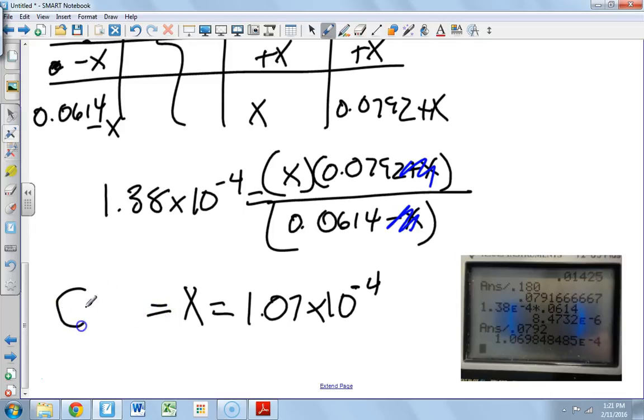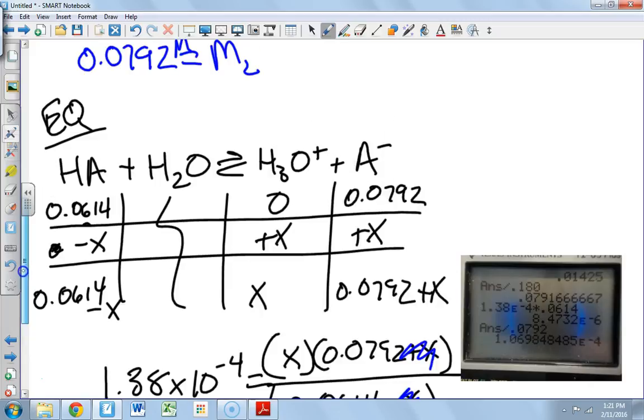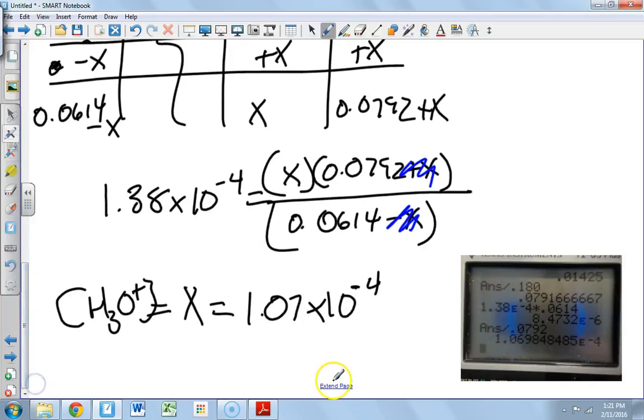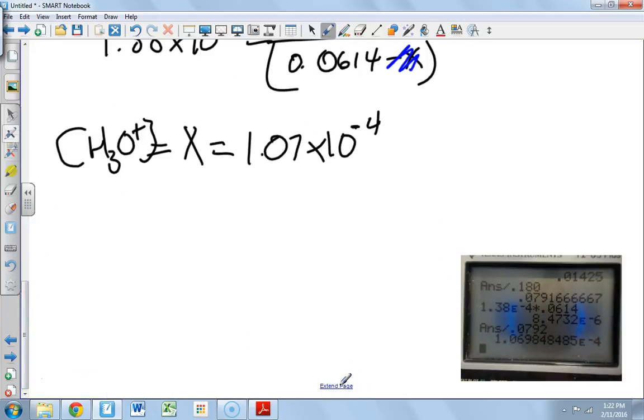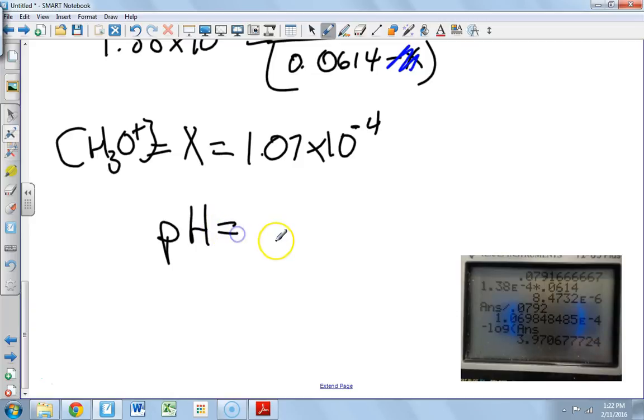Which that also happens to equal the concentration of H3O plus, because see, it's in this column. And so now we do the negative log of that, and we get a pH equal to 3.97.